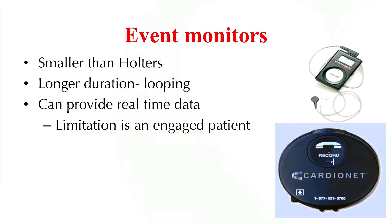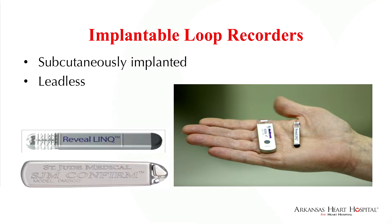Event monitors, or looping event recorders, are smaller than Holter monitors. They continuously record information, and when a patient experiences a symptom or an arrhythmia meets pre-specified criteria, the device will record anywhere from 60 to 90 seconds worth of data. This can provide almost real-time data, transmitted either through a trans-telephonic mechanism or now more commonly through a cellular mechanism.